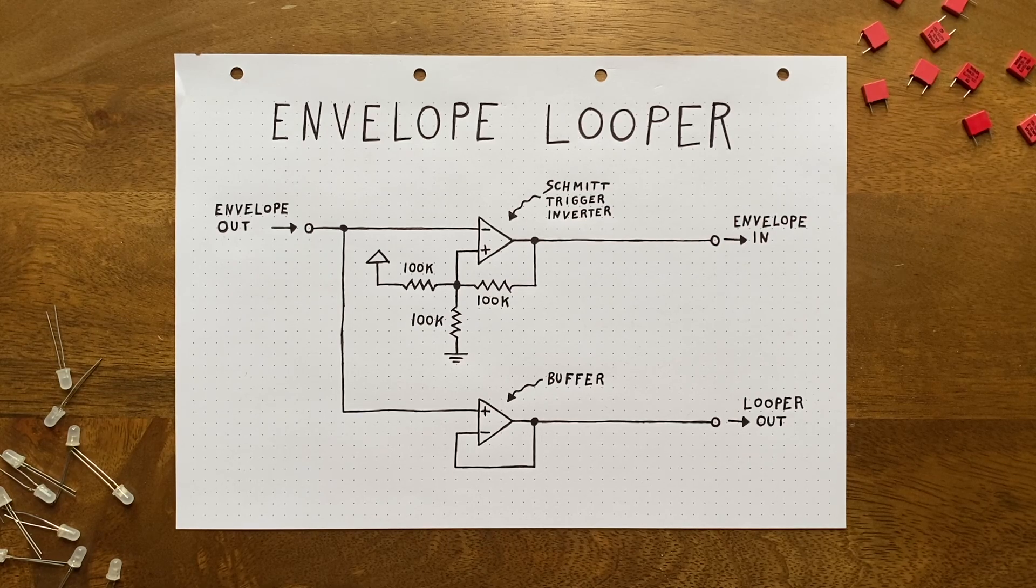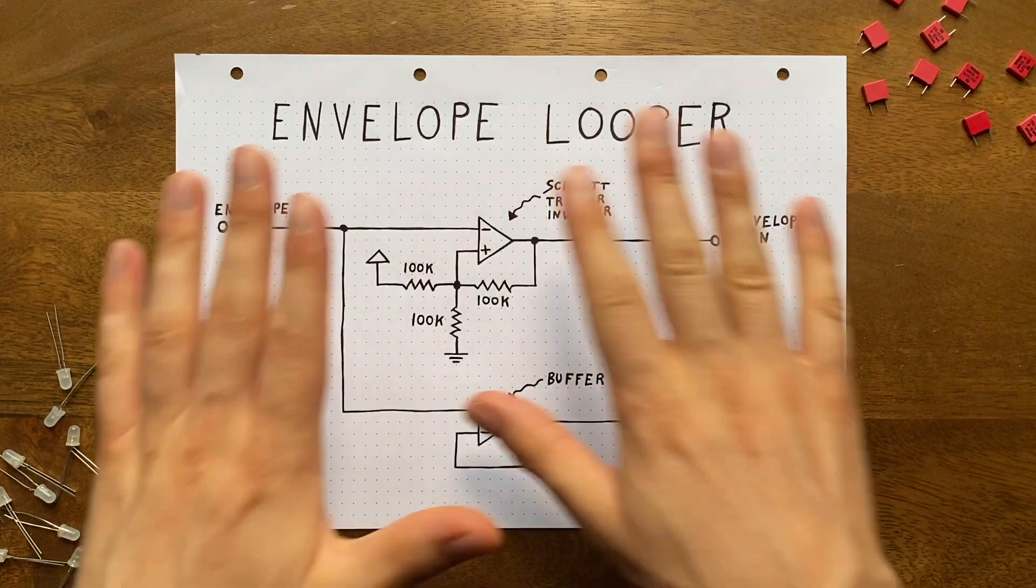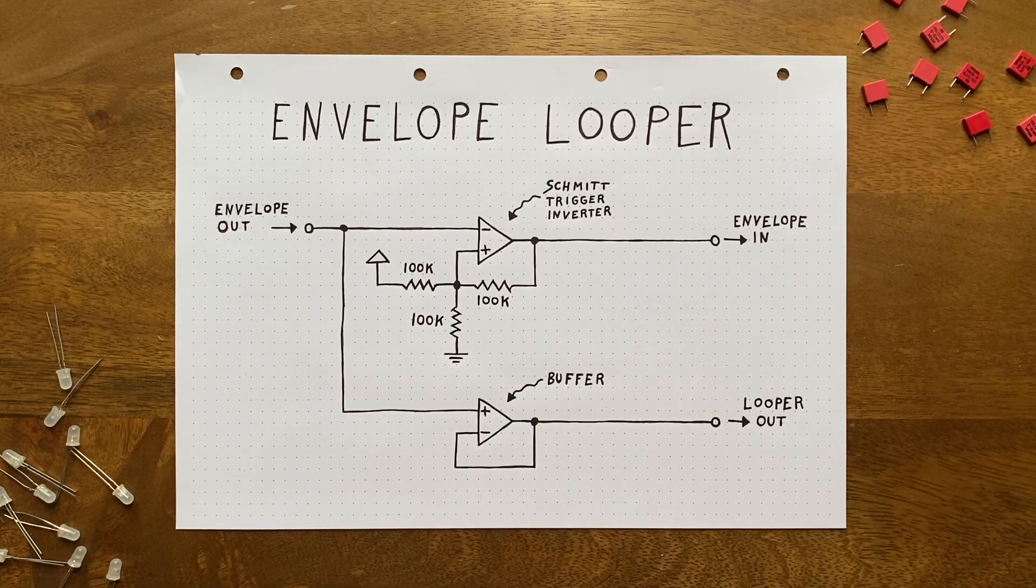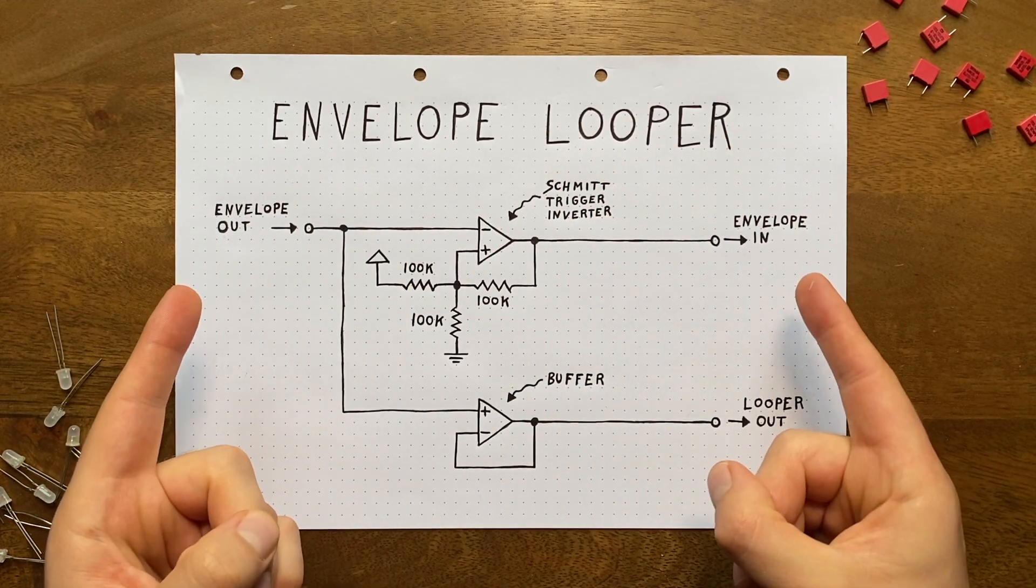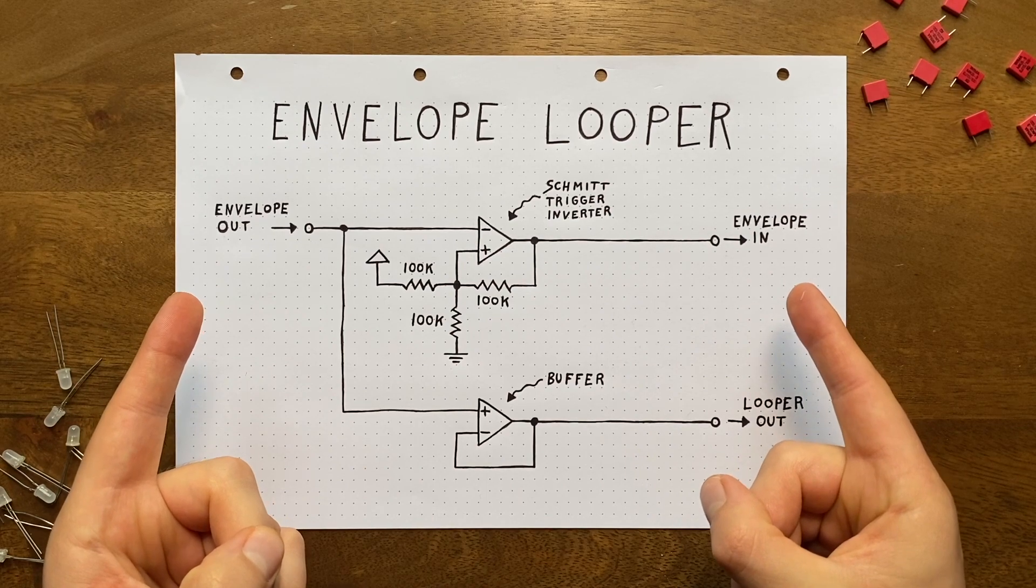Here's a rough idea. You can turn any regular envelope into a looping envelope using this little circuit. Just patch it in between output and input and your envelope will re-trigger continuously.